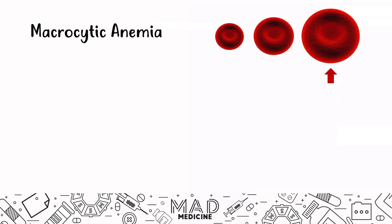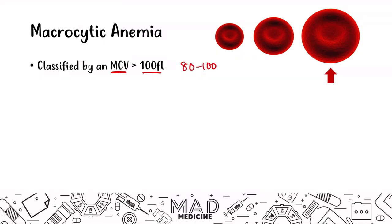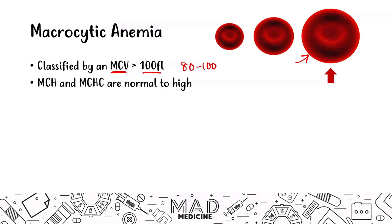Macrocytic anemias are classified by an MCV that is greater than 100. Normally, 80 to 100 is a normal MCV — mean corpuscular volume. In these cases, you're going to have a large red blood cell, as indicated with the arrow. MCH and MCHC are going to be normal to high in most cases.